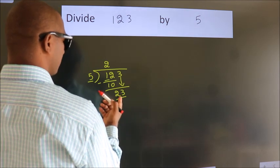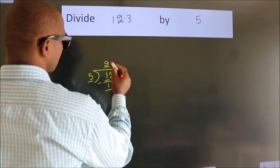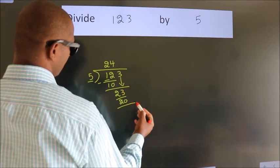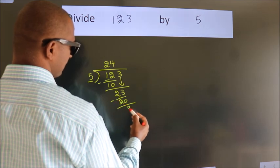A number close to 23 in the 5 table is 5 fours, 20. Now we subtract and get 3.